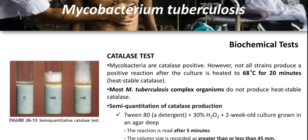For the catalase test: most species of mycobacteria — except certain strains of Mycobacterium tuberculosis complex, some isoniazid-resistant strains, and M. gastri — produce the intracellular enzyme catalase, which splits hydrogen peroxide into water and oxygen. Catalase can be assessed by the semi-quantitative catalase test or the heat-stable catalase test. The semi-quantitative test is based on the height of a column of bubbles of oxygen formed by the enzyme. Mycobacteria are divided into those producing less than 45 mm and those producing more than 45 mm of bubbles; the control tube has no effervescence.